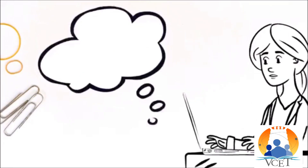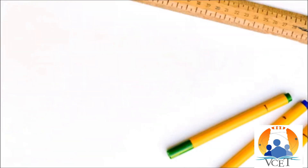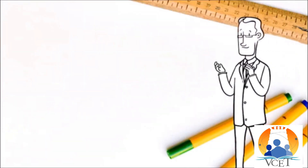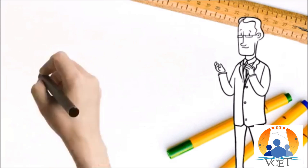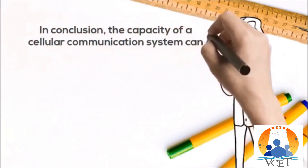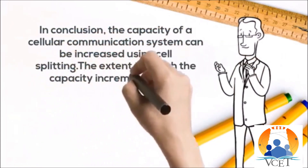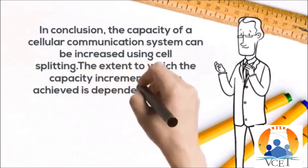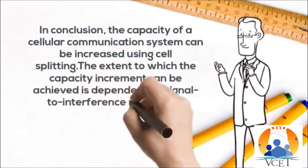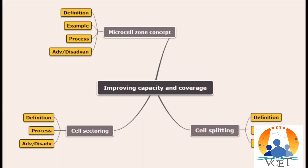In conclusion, the capacity of a cellular communication system can be increased using cell splitting. The extent to which capacity can be increased depends on the signal-to-interference ratio of the system after cell splitting. Here is the mind map of the concepts we have learned so far.